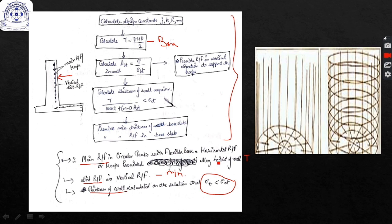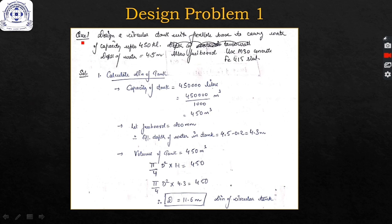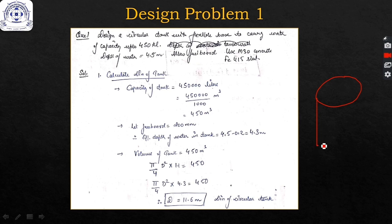Now we will do a design problem: design a circular tank with flexible base to carry water of capacity 450 kiloliters. The depth of water is given as 4.5 meters. We have to determine tank dimensions — height is given as 4.5 m and we will calculate the diameter from the required capacity.